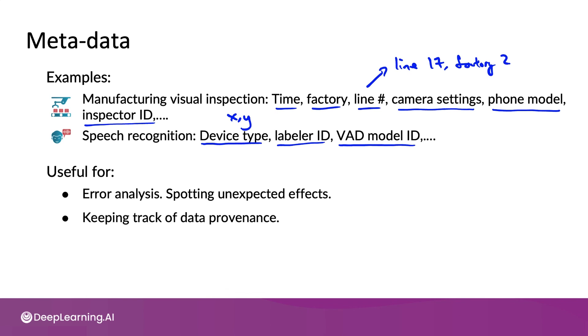Of course, maybe not surprisingly, this type of metadata is also very useful for keeping track of where the data came from — that is, data provenance. The takeaway from this video is that for large, complex machine learning systems that you might need to maintain, keeping track of data provenance and lineage can make your life much easier. And as part of building out these systems, consider keeping track of metadata, which can help you with tracking data provenance as well as error analysis.